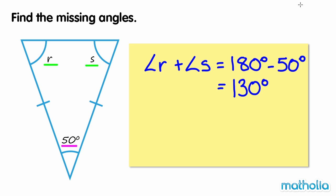This is an isosceles triangle, as two sides are of equal length. Angle R is equal to angle S. So we can find their value by dividing 130 degrees by 2. Angle R and angle S both equal 65 degrees. The missing angles are both 65 degrees.